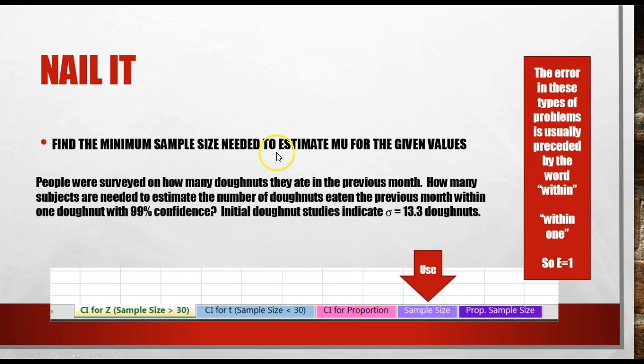Find the minimum sample size needed to estimate mu for the given values. People were surveyed on how many doughnuts they ate in the previous month. How many subjects or people are needed to estimate the number of doughnuts eaten the previous month within one doughnut with 99% confidence.